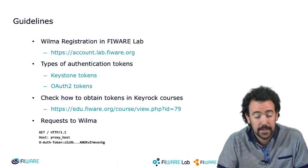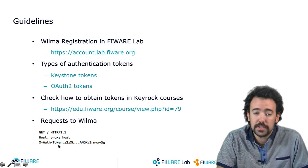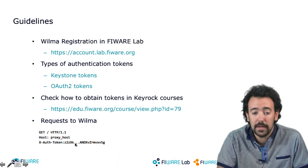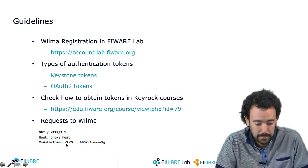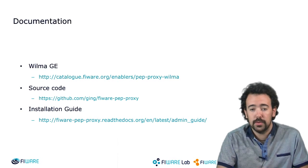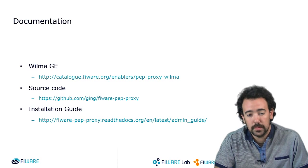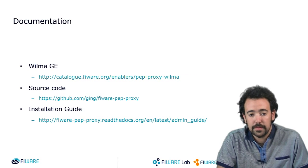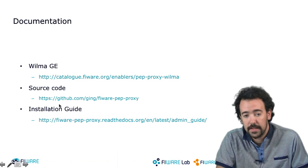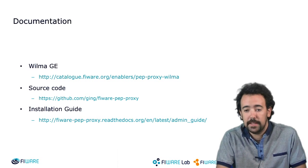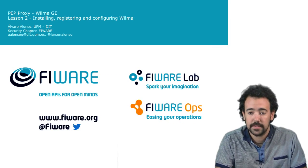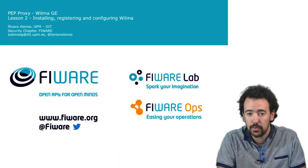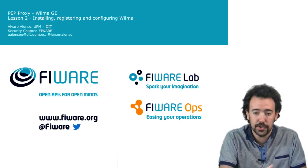Once we have that authentication token, we have to include it in all the requests that we send to Wilma, by introducing an HTTP header like this one in every request. Finally, some pointers to documentation that will be useful: the source code, the entry in the FIWARE catalog, and the installation guide in which all the steps that I'm going to perform today during the demo are explained. So that's the introduction to this lesson — I'm going to show you how to install, register, and configure Wilma on your own computer.